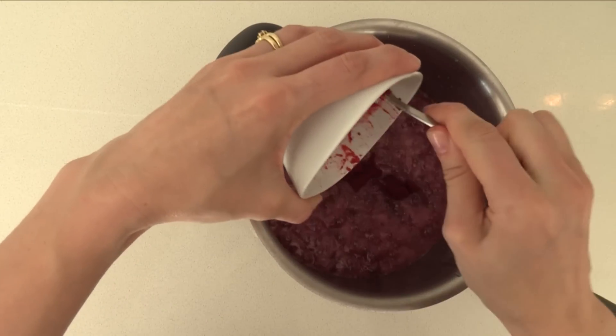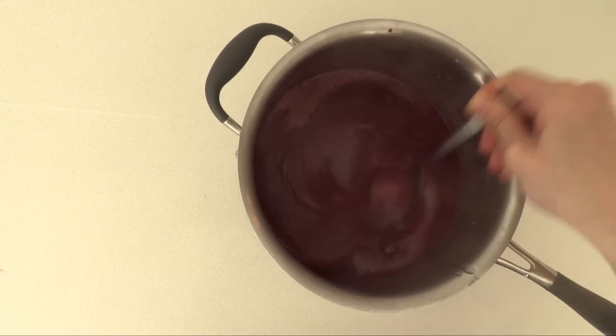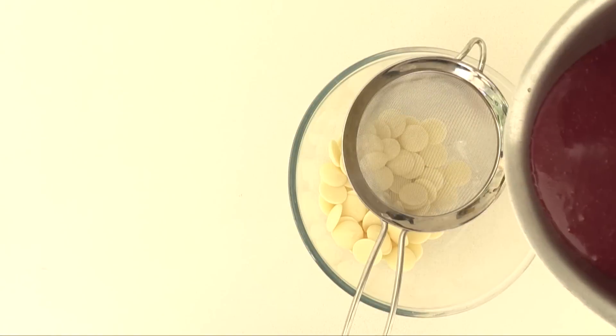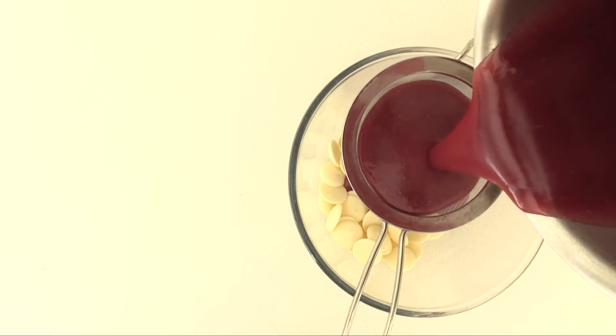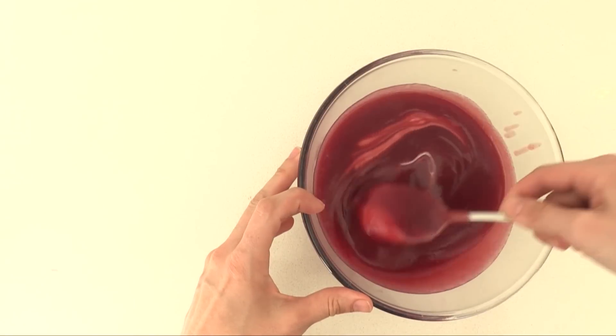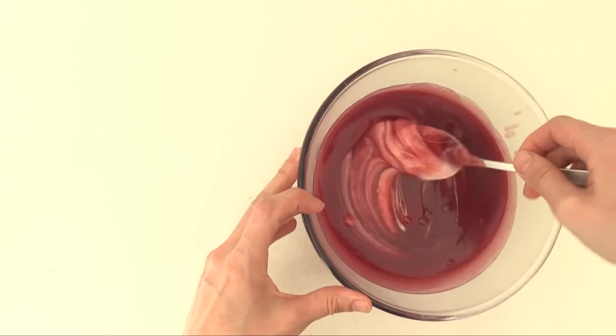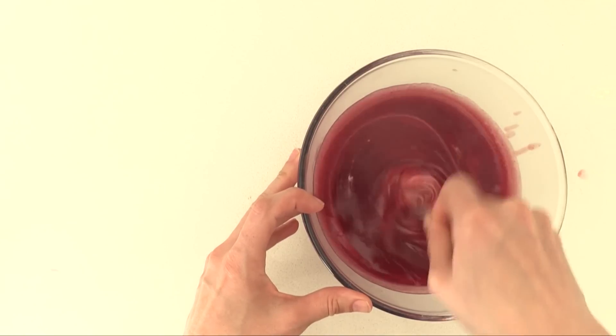Remove it from the heat and add your gelatin and stir until it is dissolved. And then pour that through a sieve onto the white chocolate. Stir that white chocolate through, add some red colouring to brighten it up. And now we want that glaze to cool down.